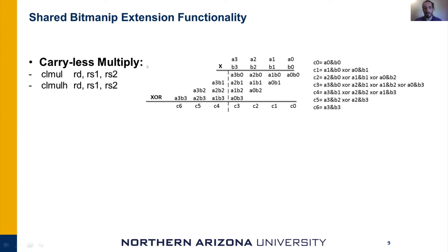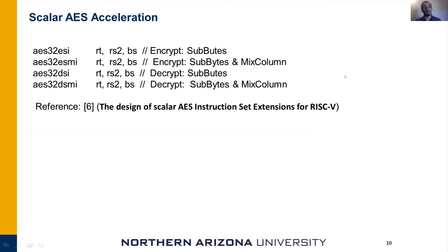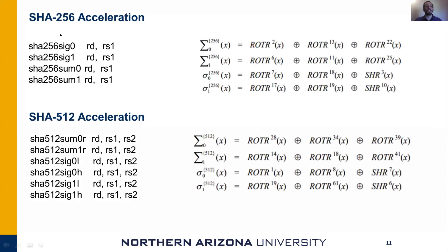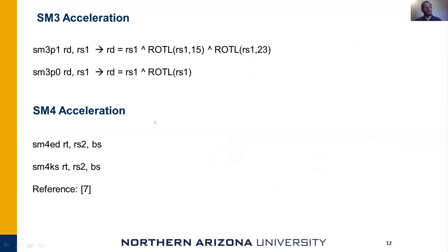We have carry-less multiply, where the multiplication operation uses AND instead of normal multiplication and XOR instead of addition. We have specific AES instructions to accelerate the AES algorithm; details can be found in the paper on the design of scalar AES instruction set extension for RISC-V by Ben Marshall and colleagues. We also have SHA-2 acceleration instructions for SHA-256 and SHA-512, which implement the functions of those algorithms, and similarly SM-3 and SM-4 algorithm instructions.